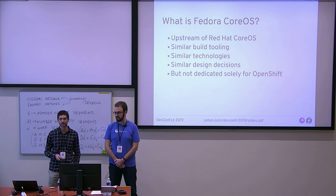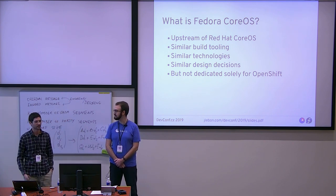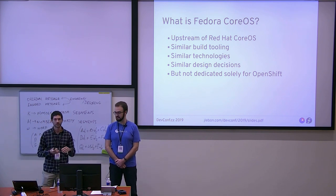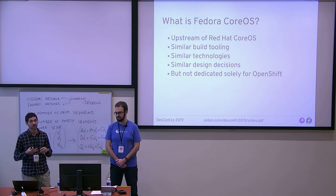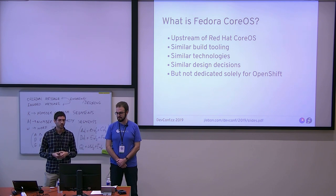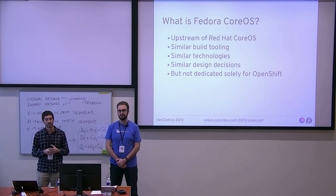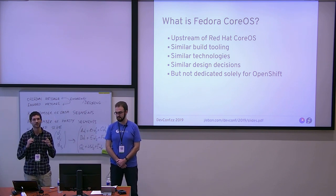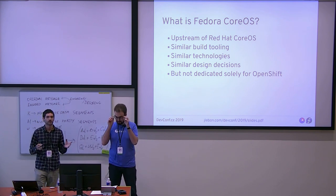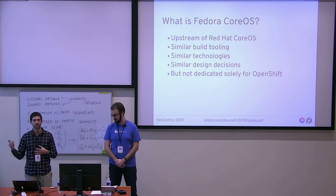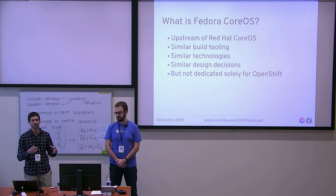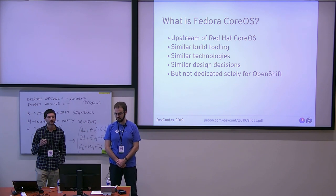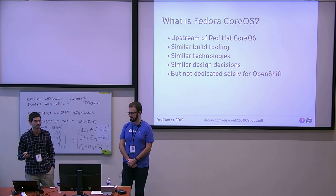Fedora CoreOS is the upstream of Red Hat CoreOS. We're trying to set up the patterns that get inherited by Red Hat CoreOS — a lot of things are similar: the way the OS is built, the same tooling, a lot of the same technologies like Ignition, and similar design decisions. But the major difference is that whereas Red Hat CoreOS's sole purpose is to be a platform for OpenShift, Fedora CoreOS has a wider view. You could run it standalone without OpenShift or Kubernetes, or use it for OpenShift or Kubernetes. One of our secondary use cases is to be a platform for other container orchestrators — it doesn't even have to be OpenShift or Kubernetes.